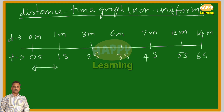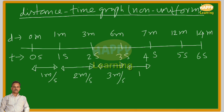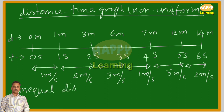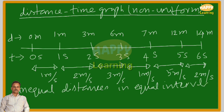Here, time is taken for 1 second intervals, but the distances are not equal. For the first second, 1 meter per second. In the second second, 2 meters are covered in 1 second. In the third second, 3 meters are covered, so speed is 3 meters per second. In the fourth second, 1 meter is covered, so speed is 1 meter per second. In the fifth second, 5 meters are covered. And in the sixth second, 2 meters per second are covered. For the same period of 1 second, distances covered are not equal. Unequal distances are covered in equal intervals of time. That means this is a non-uniform motion.